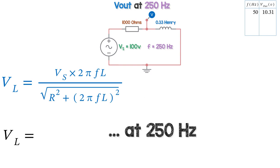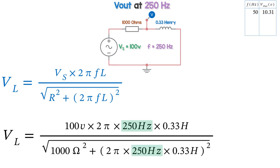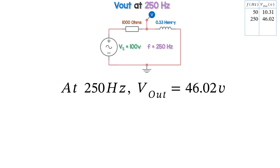At 250Hz, Vl our output is 100V times 2π FL, where F is the frequency of 250Hz. And it's the same denominator, but you just replace F with 250. At 250Hz, Vout is 46.02 volts, so it's going up with frequency.